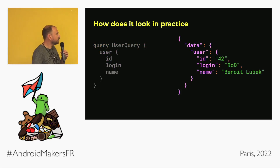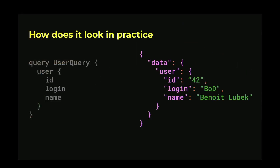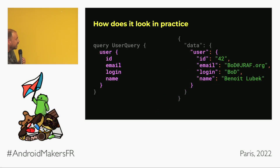Here's an example of a response — no surprise, the syntax is JSON just like in REST. A small difference is that the data field will always be present as part of the envelope, and you could also have an errors field at the same level, which is part of the spec. Notice the mirror image between query and response — you get exactly the fields you request and only them.